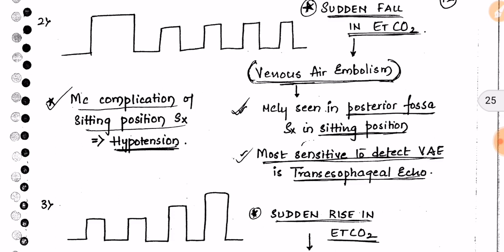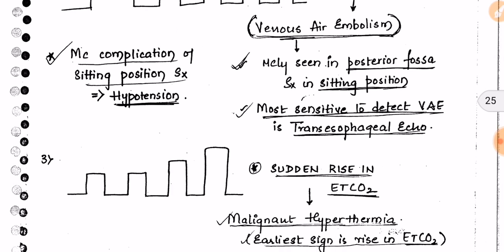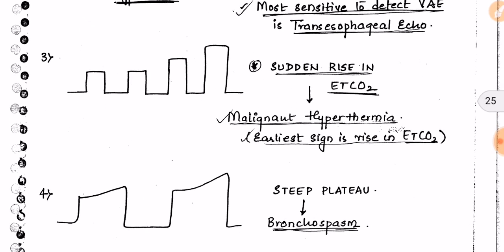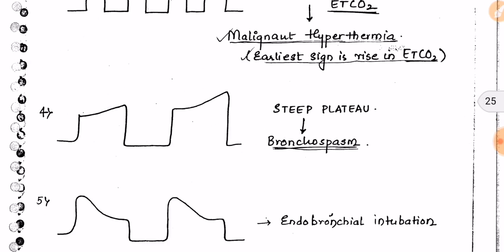The most common complication of sitting position surgery is postural hypotension. If there is a sudden rise in endotracheal CO₂, the most important cause is malignant hyperthermia. The earliest sign of malignant hyperthermia is a rise in endotracheal carbon dioxide.